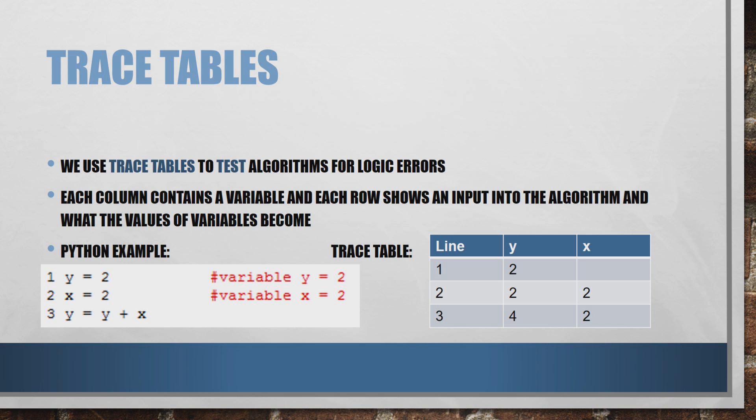We move on to line 2, where in our Python example we're setting the value of x to equal 2. We're not doing anything to y on that line. So at line 2, y should still equal 2 because that's what we set it to on the previous line, but x now also equals 2. That's reflected in our trace table.